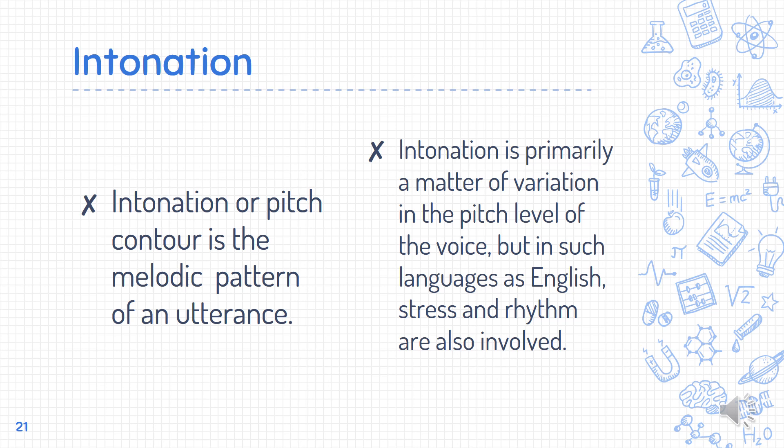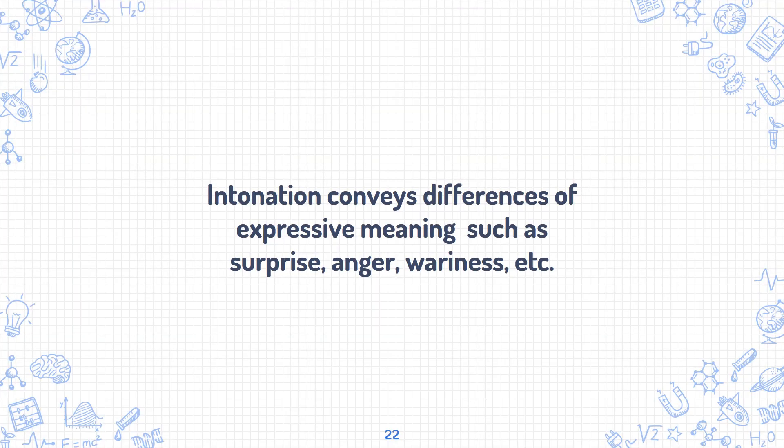The fourth prosodic feature is intonation. Intonation, or pitch contour, is the melodic pattern of an utterance. Intonation is primarily a matter of variation in the pitch level of the voice, but in languages such as English, stress and rhythm are also involved. Intonation conveys differences of expressive meaning such as surprise, anger, weariness, and so on.